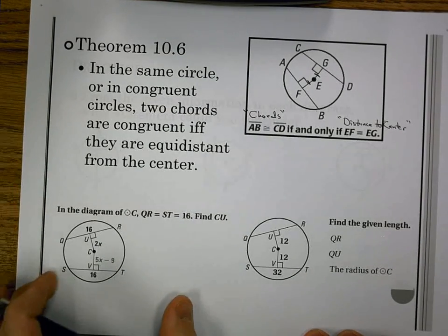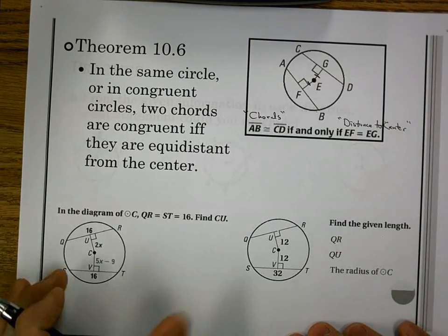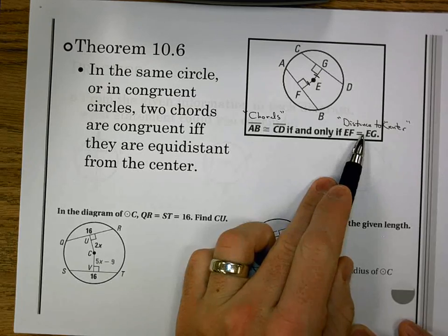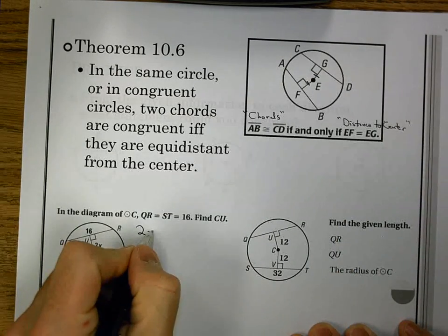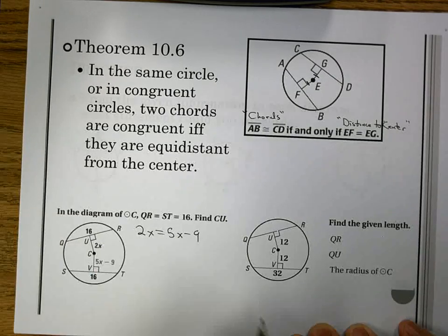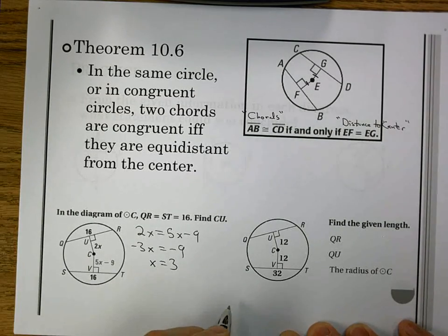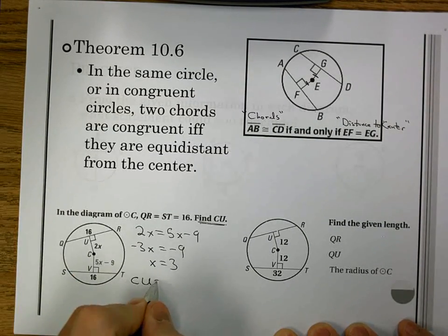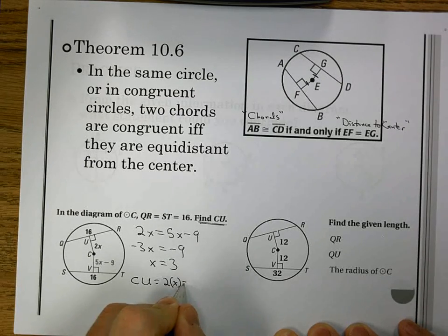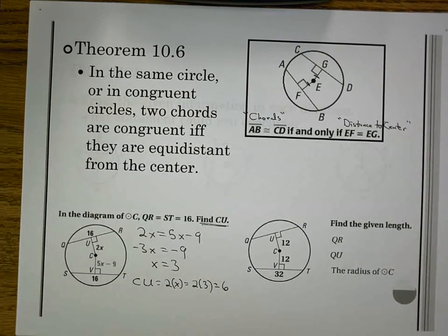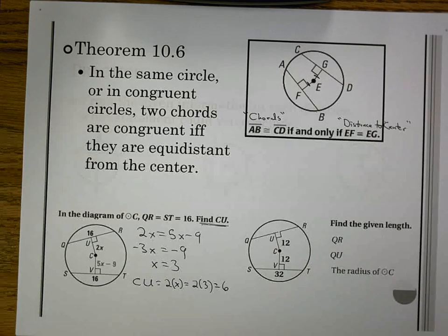This is the basic example we're going to see of it. I look and I have that QR and ST are the same. Those are my chords. That means the distance to the center is the same, which is what I'm going to solve for. So I get 2x equals 5x minus 9. When I solve that, I get negative 3x equals negative 9, and x equals 3. Well they want CU, which is 2x. So I plug in the 3, and I get that CU is 6. If I check real fast, CV should also be 6, because they are equidistant. And I look, and then 5 times 3 is 15, minus 9 would be 6. So that's my value for CU, because they are equidistant.